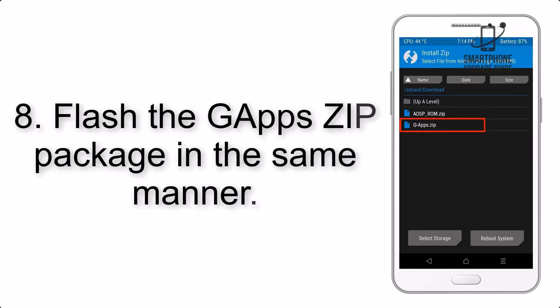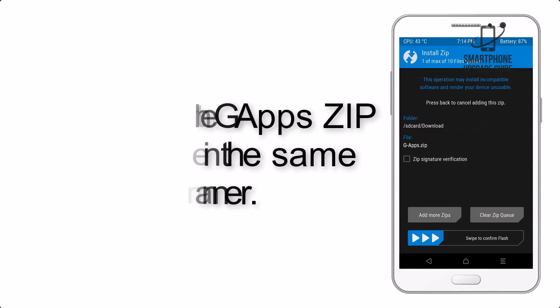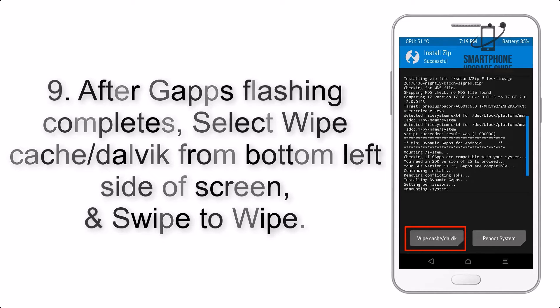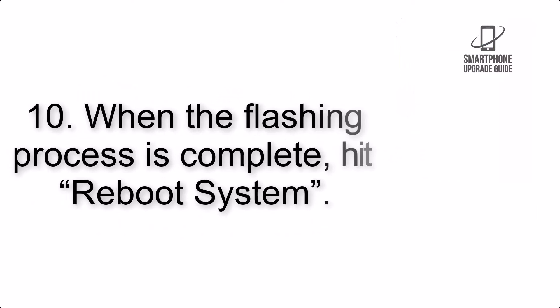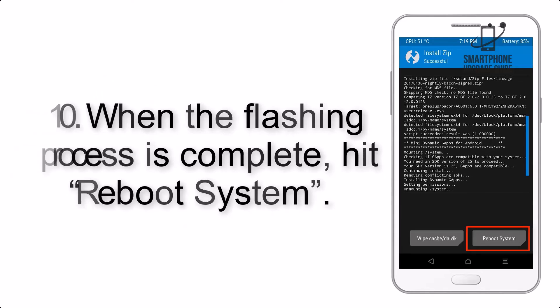Step 8: Flash the GApps zip package in the same manner. Step 9: After GApps flashing completes, select Wipe Cache and Dalvik from the bottom left side of the screen and swipe to wipe. Step 10: When the flashing process is complete, hit Reboot System.